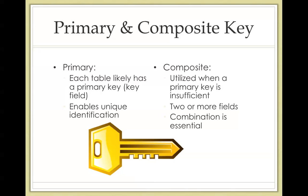So primary and composite keys. Every table has a primary key, also known as a key field. A primary key is a field that is different for every record in a table, allowing each record to have a unique identification.